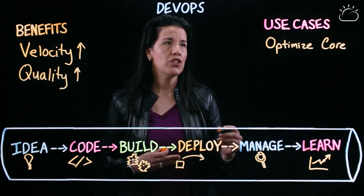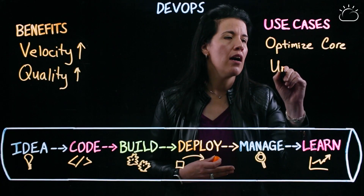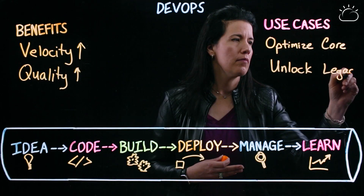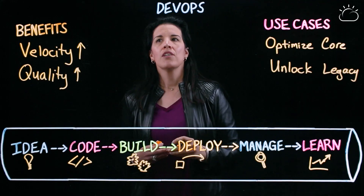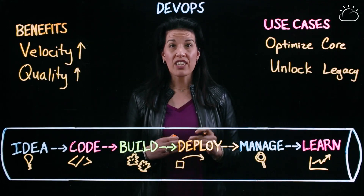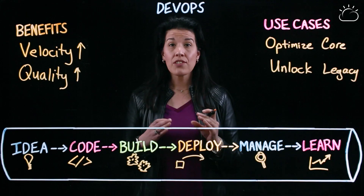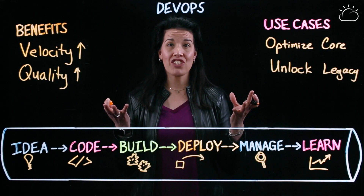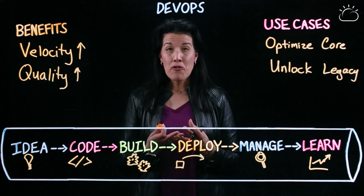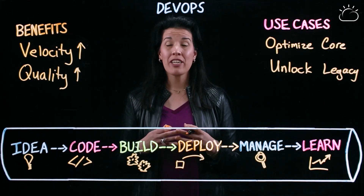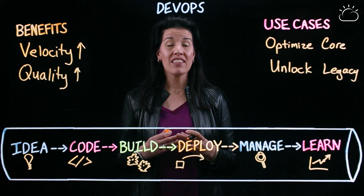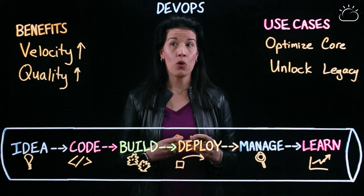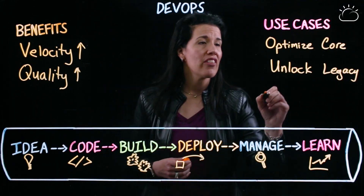The second use case is about unlocking the legacy. This is all about addressing culture, ways of working, and bringing development and operations together in new ways with integrated multidisciplinary teams. This amps up any kind of automation that we could have done in the core.